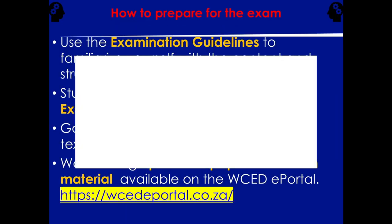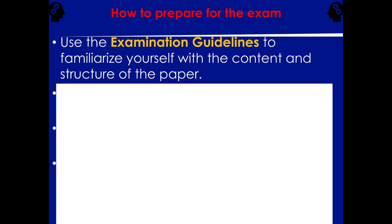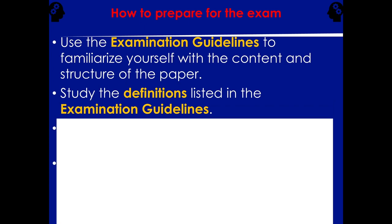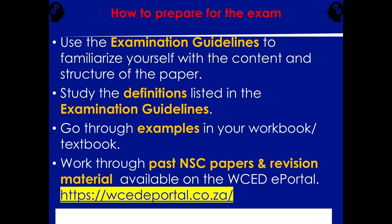To prepare for your exam, use the exam guidelines freely available online. Study the definitions given in the exam guidelines because definitions make up all the Level 1 questions — typically 2.1, 3.1, 4.1, 5.1. Write down all the definitions first. Go through your workbook, textbook, and work through past exam papers — there is a link to get past papers with memos. Going through 10 exam papers with memos is the best preparation you can do.